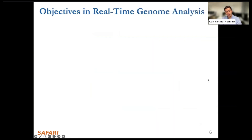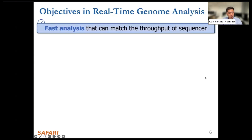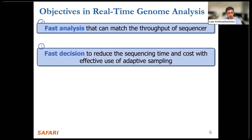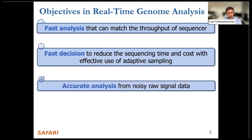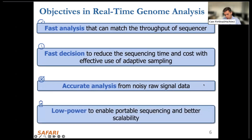There are certain objectives in real-time genome analysis. We want to do fast analysis that can match the throughput of the sequencer, so we don't fall behind and can make real-time decisions. We also want fast decisions to reduce sequencing time and cost with effective use of adaptive sampling. We want to perform accurate analysis from noisy raw signal data, and we want to do all these computations using low-power computation to enable portable sequencing and better scalability.